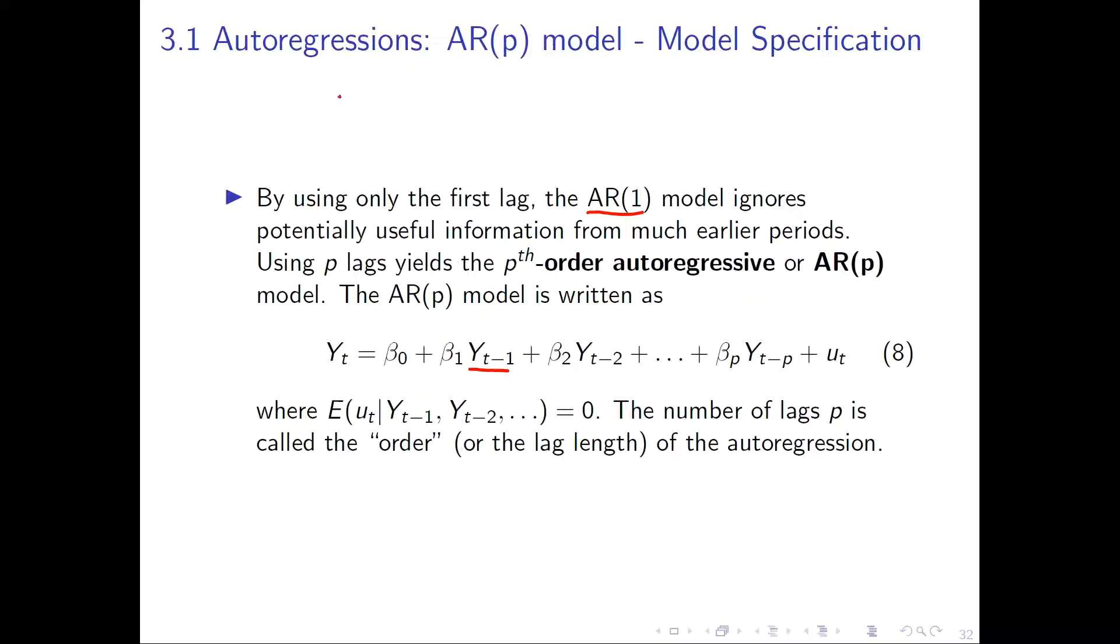For example, in our model on the quarterly GDP growth data, we might have seasonality in the data. Then we would have included lag 1, y_t minus 1, plus beta 2, y_t minus 2, plus beta 3 of y_t minus 3, and beta 4 on y_t minus 4, plus the residual term.